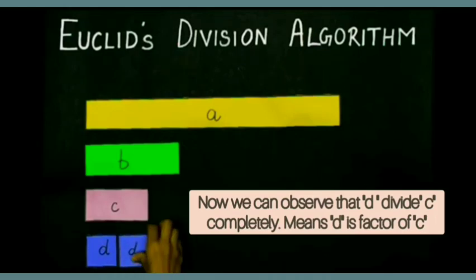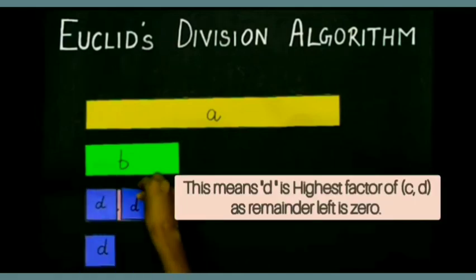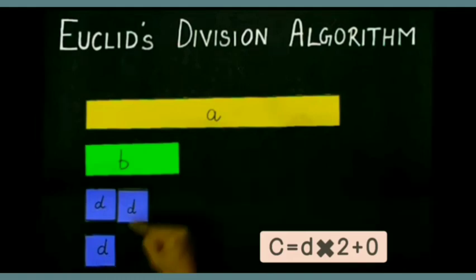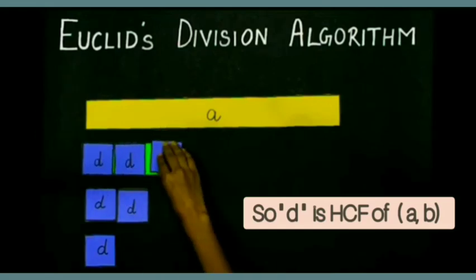Means D is a factor of C. This D is the highest factor of C and D, has remainder left is zero. Now, this D is also the HCF of A and B.